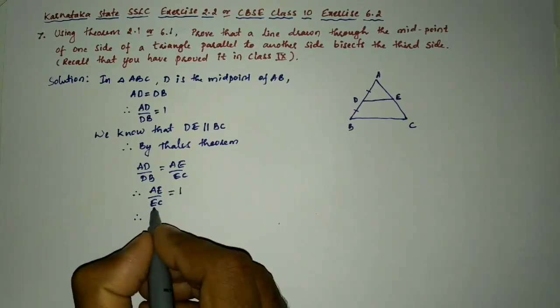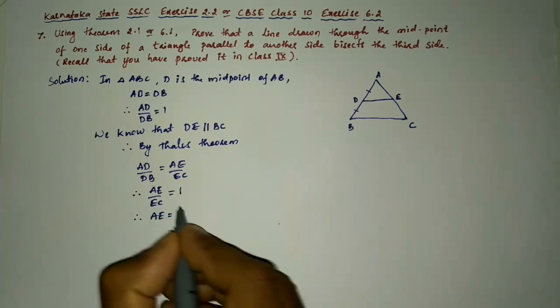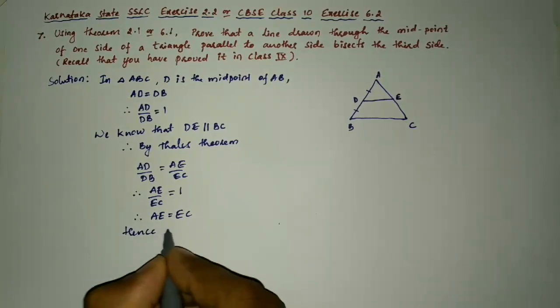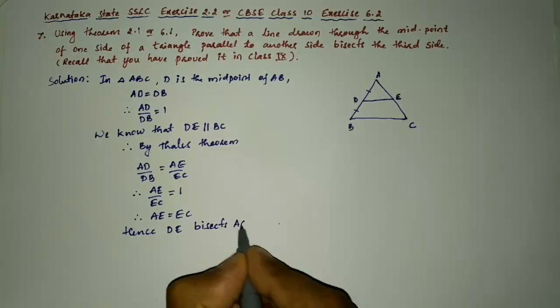So therefore when I transform EC from LHS to RHS we can say AE is equal to EC. Hence DE bisects AC.